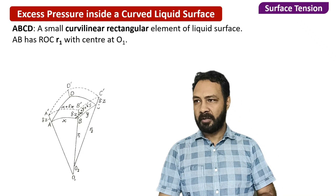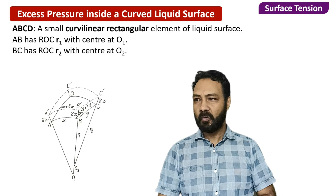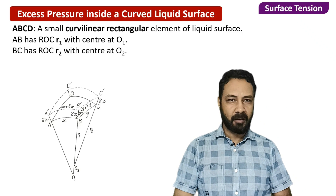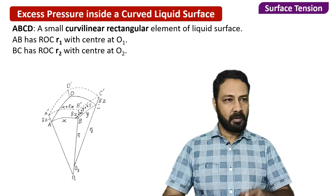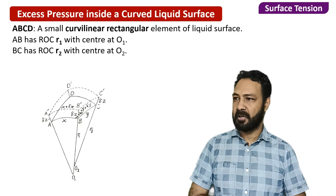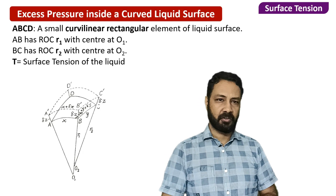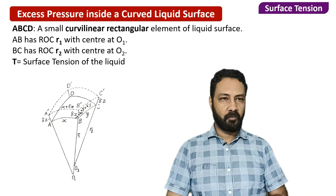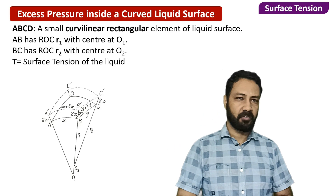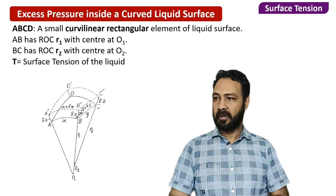The center of curvature of the path AB is at O1, and the center of curvature of path BC is at O2. Now, suppose some external agent slowly pulls the surface up to a new position A', B', C', D'. T is the surface tension. Using the work-energy method approach, we want to find the excess pressure between the two sides of the surface ABCD.